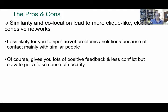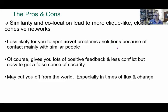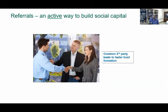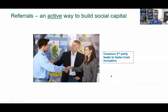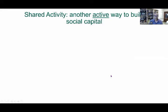Being surrounded by similar people makes you feel good — people tell you only positive things — but it can cut you off from the world, especially when things are changing very fast. There are two more active ways to form connections. The first is a referral: you consciously ask someone you already know to connect you with a specific type of person. Trust is built faster because there's a common third party — the referee — connecting you to your target.